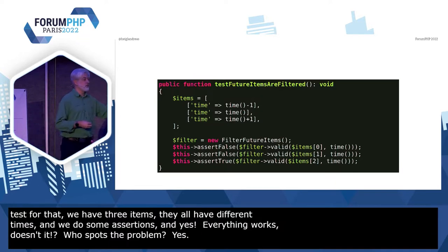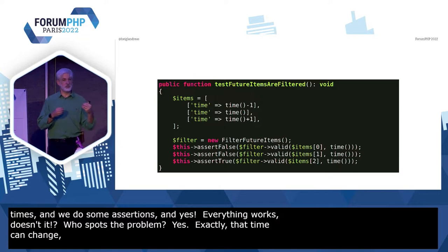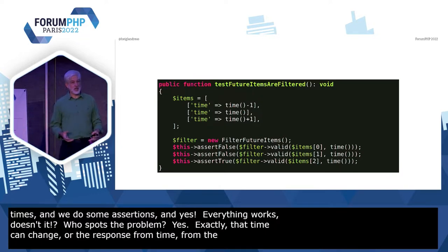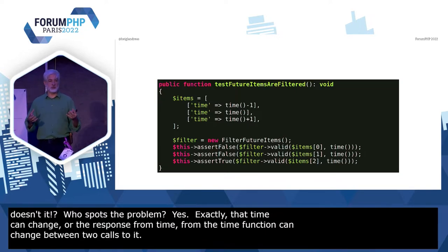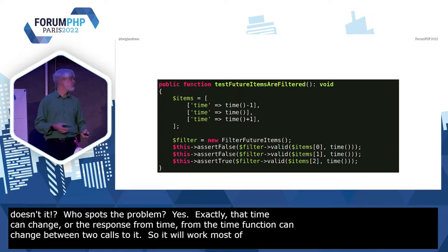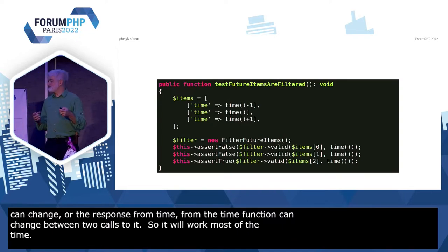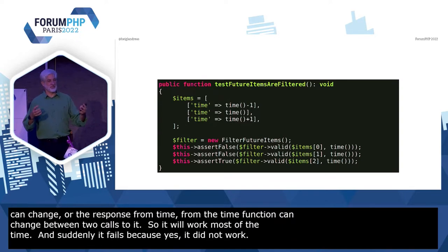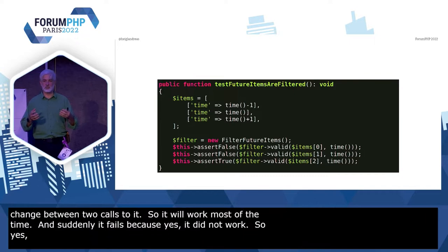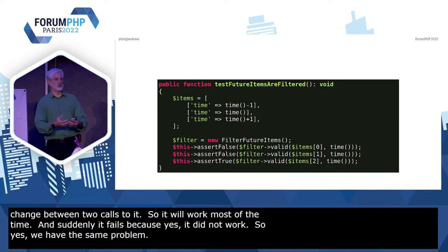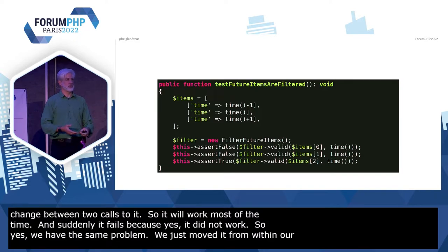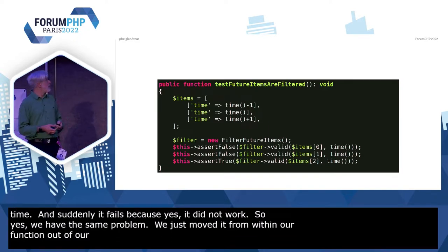The time can change — the response from the time function — can change between two calls to it. So it will work most of the time, and suddenly CI fails. So we still have the same problem. We just moved it from within our function out of our function, so we made it somebody else's problem. Most of the time, somebody else is still me.